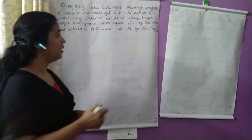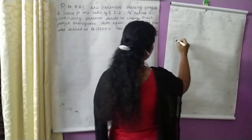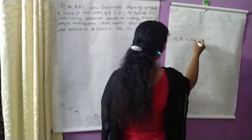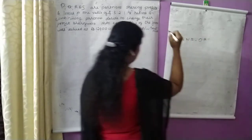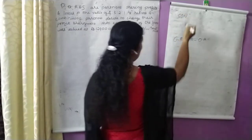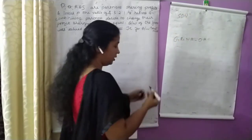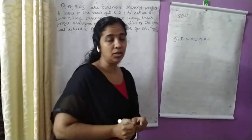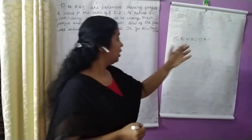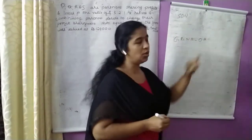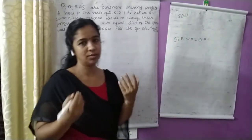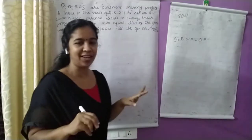Gaining ratio is equal to new ratio minus old ratio. In admission, we have to divide the goodwill. Sacrifice ratio is equal to old ratio minus new ratio. We have to divide the new ratio minus old ratio.